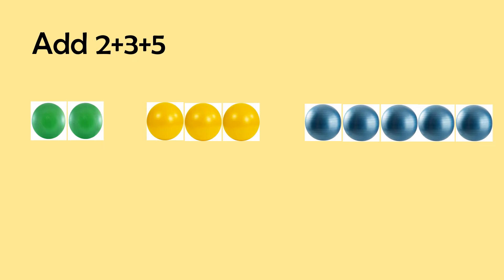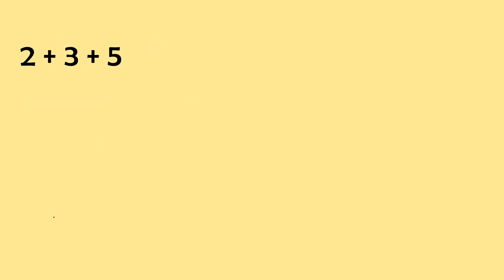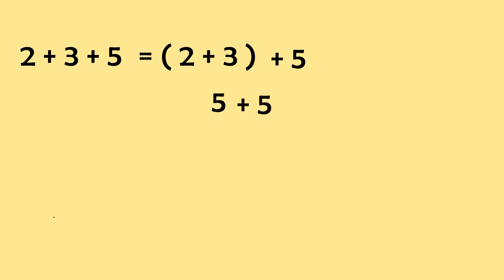Now, using the properties of addition, we can add this by adding 2 numbers at a time. First, let us add 2 plus 3. We show this by grouping using parentheses. So, we have (2 plus 3), then copy the 5. Now, 2 plus 3 is equal to 5, then write 5 again. And we have 5 plus 5 is equal to 10.